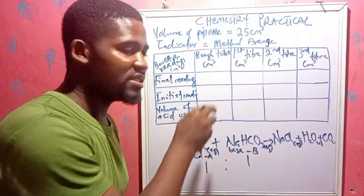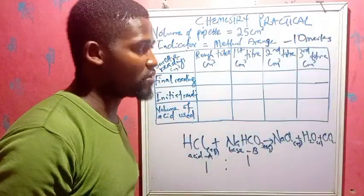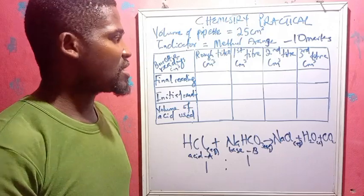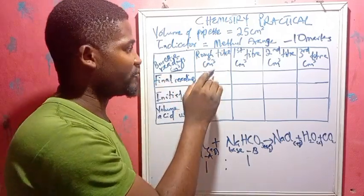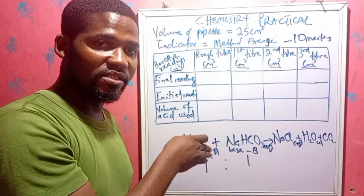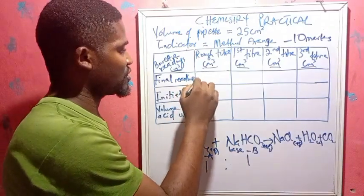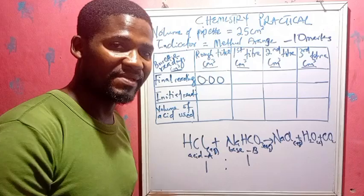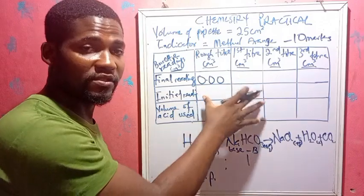It is very important to start from 0.00. Take note that this table has 10 marks awarded — you can get all 10 marks or lose all 10 marks, depending on how you report the practical. The burette reading must be in cm³. You must have the rough titre column, the final reading, and the initial reading. All values on this table must be recorded to two decimal places — so 0.00, not 0.0.